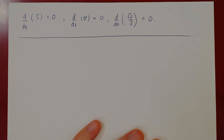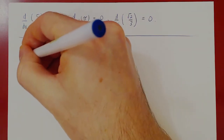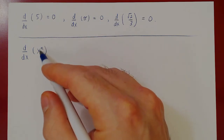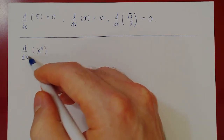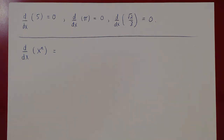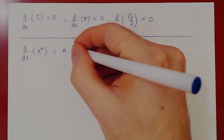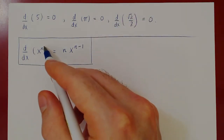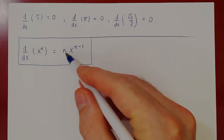Then we have a really nice rule called the power rule. If the function is f of x equals x to the n, what is the derivative with respect to x of x to the n? We find the derivative of x squared to be 2x, the derivative of x cubed to be 3x squared — every time it looks like we bring the power down times x to the power minus 1. To differentiate x to the n, bring the power down and subtract 1 from the exponent.